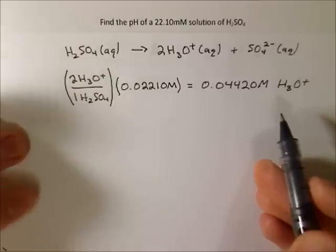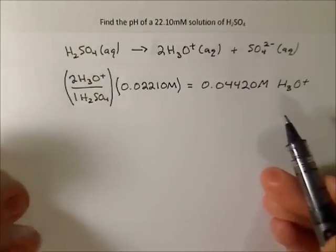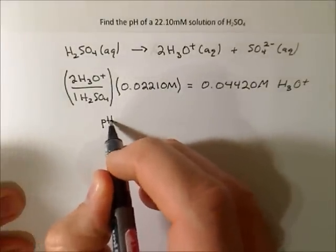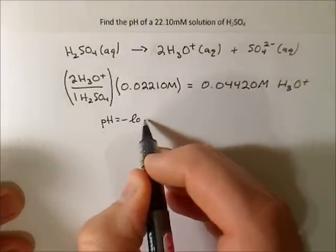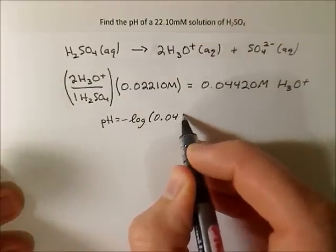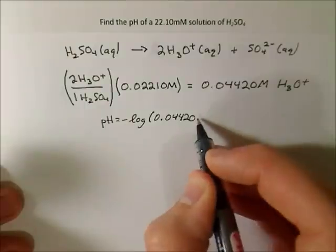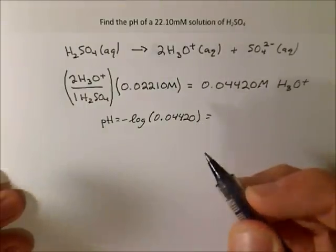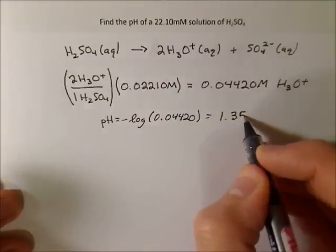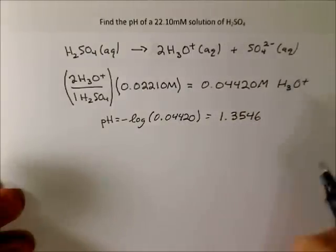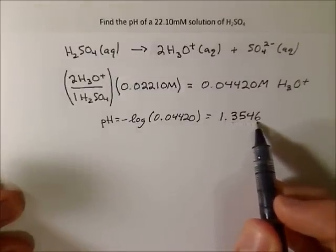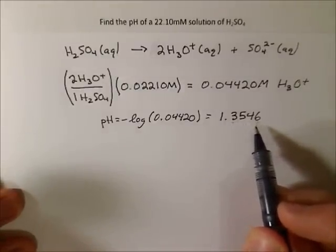So now that we have our concentration of H3O+, we can solve for the pH. And we get 1.3546. As you can see, four significant figures here, and there should be four significant figures in your answer past the decimal, so that checks out.